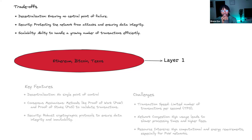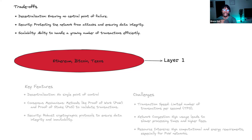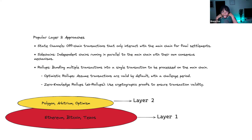For example, Bitcoin is not very scalable but is very secure. If you want to make Bitcoin more scalable by increasing the block size, it will be a little bit faster but requires fewer validators, which sacrifices decentralization. Similarly, improving scalability can sacrifice security to some extent. These are issues we haven't quite figured out in the Layer 1 space, which is why we have Layer 2 solutions.